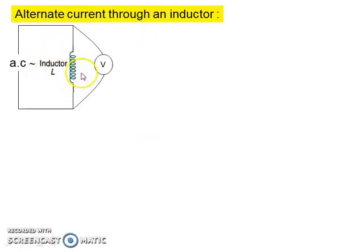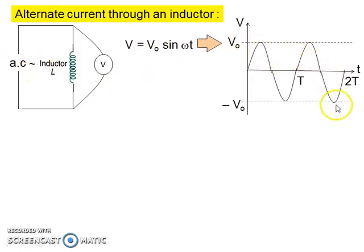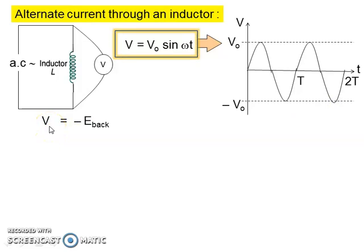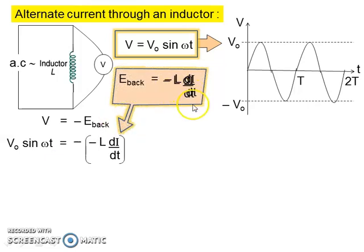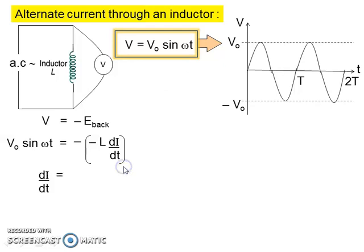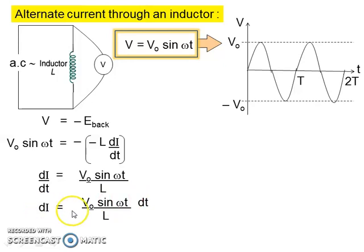Observe this circuit, which only consists of inductor L. The voltage V equals to V0 sine omega T because it's still AC current, and the graph is a sine graph for V against T. Next we are going to sketch the I against T graph. We use the relationship V supplied equals to the back EMF. So the V supplied is V0 sine omega T, and the back EMF is negative L di by dt. And di by dt equals to V0 sine omega T per L, so we bring L to the left side. We separate the variables I and T, left and right, and take the integral of both sides.